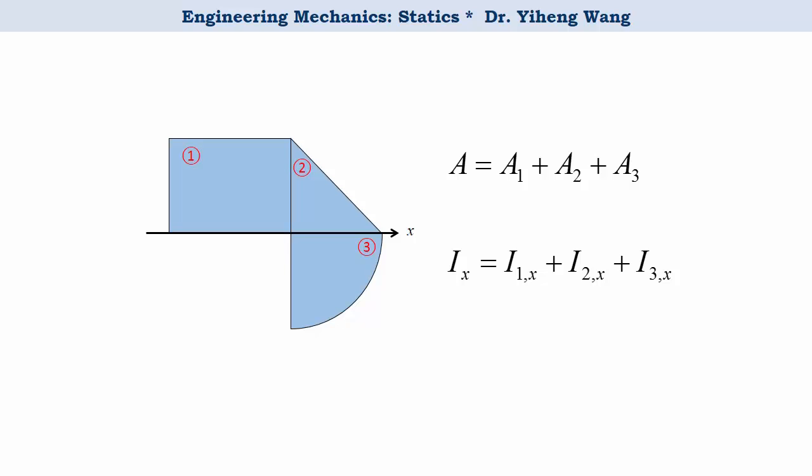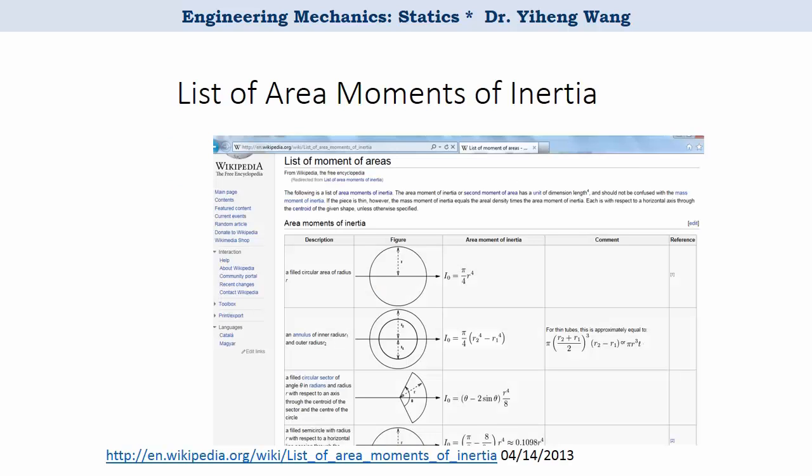But how do we find the moment of inertia of the composite shapes about this axis? We can apply the parallel axis theorem. For that we need to find the moment of inertia of each component shape about its own centroidal axis. This information is common and can be found either online or from your engineering textbook or handbooks.